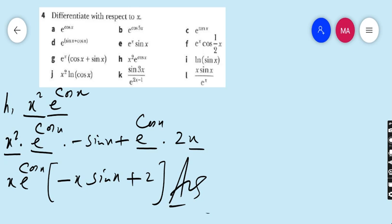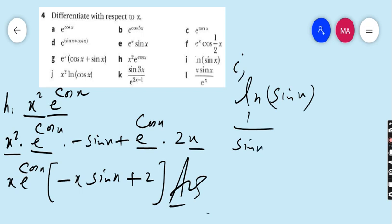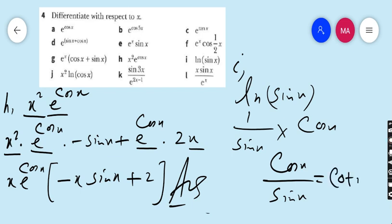Move to part I. Part I is ln(sin x). The derivative of ln is always 1 over the argument. So 1/sin x times the derivative of sin x, which is cos x. This gives cos x / sin x, which by trigonometric ratios equals cot x. So cot x is the answer of part I — a very easy part.